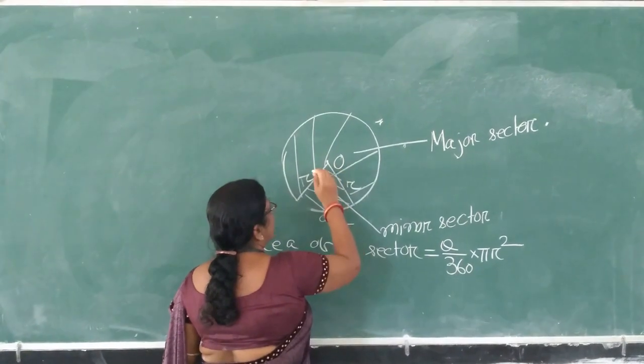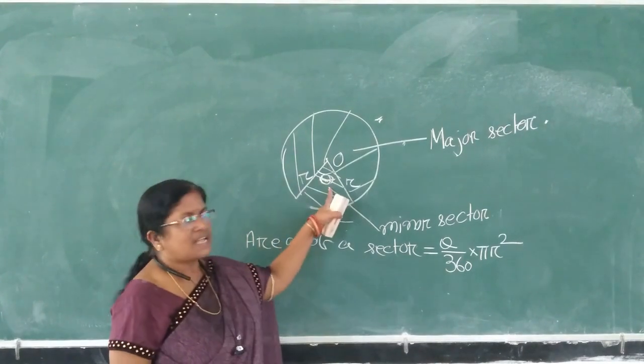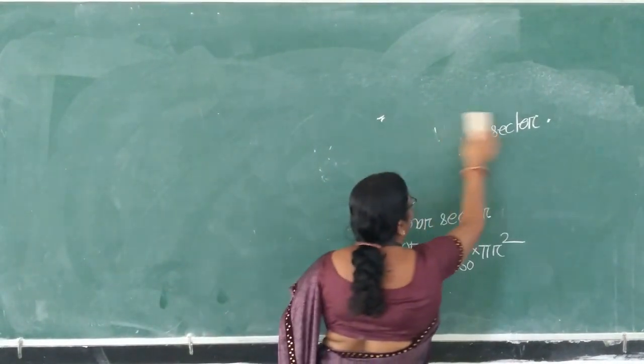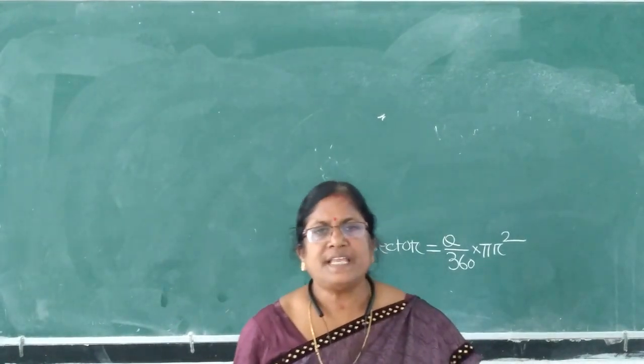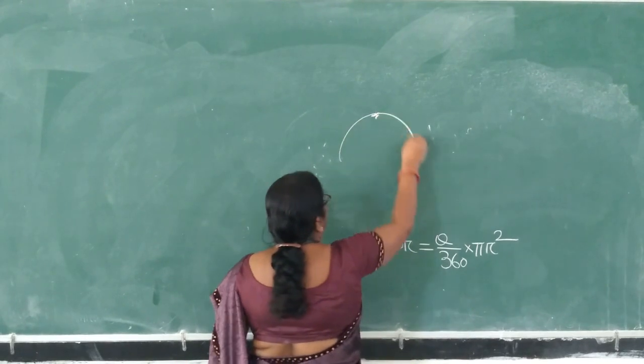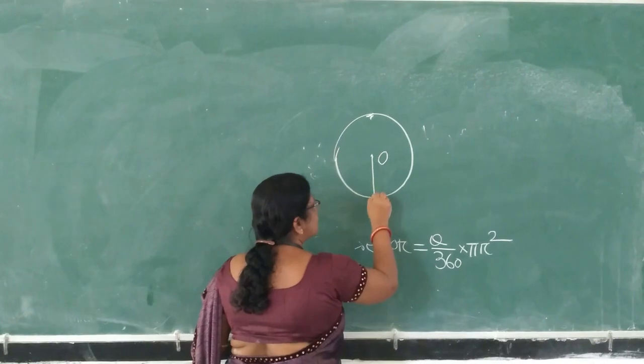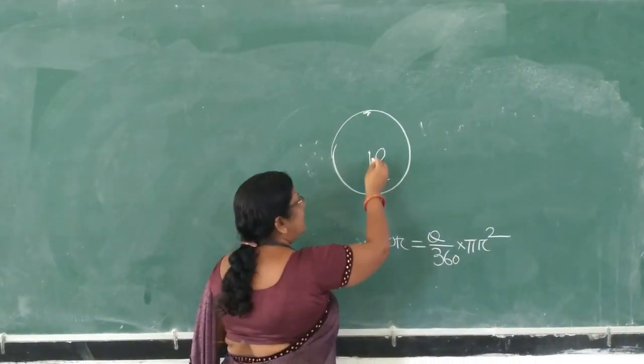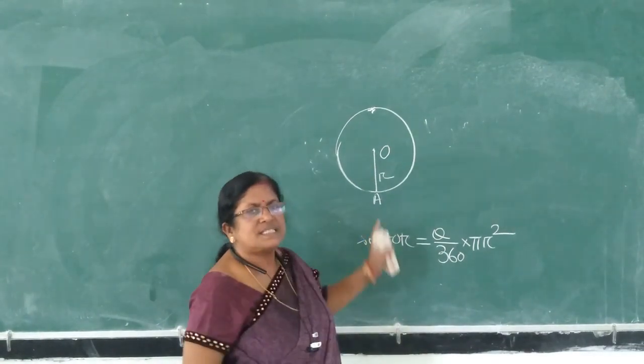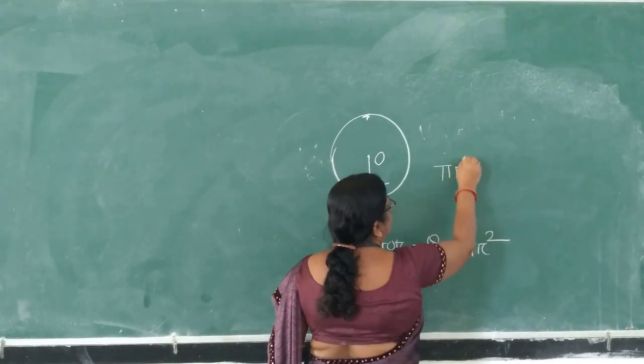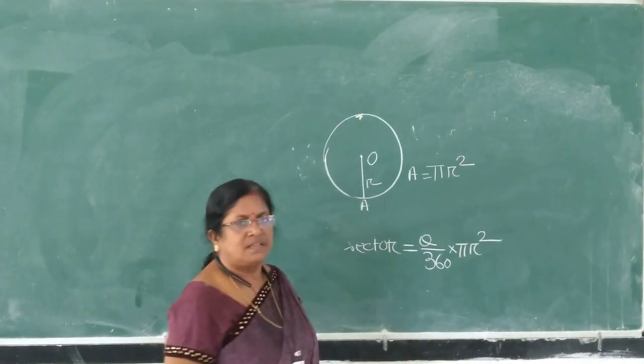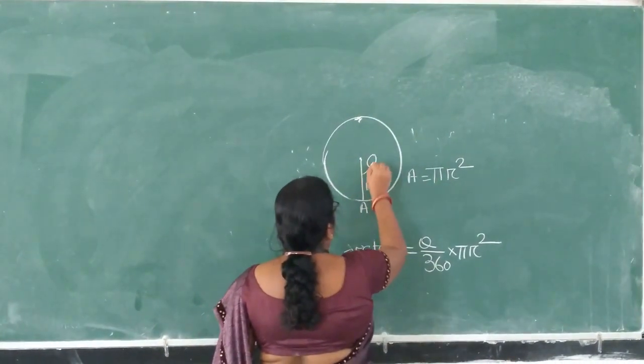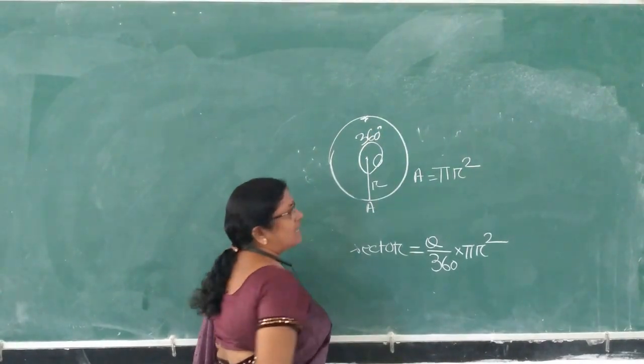This angle is proportional to the sector area. Many of you don't know how the formula for area of sector is derived. See, let us draw a circle with center O and radius R. If we rotate this radius, then in one complete rotation, this radius covers an area pi r square.